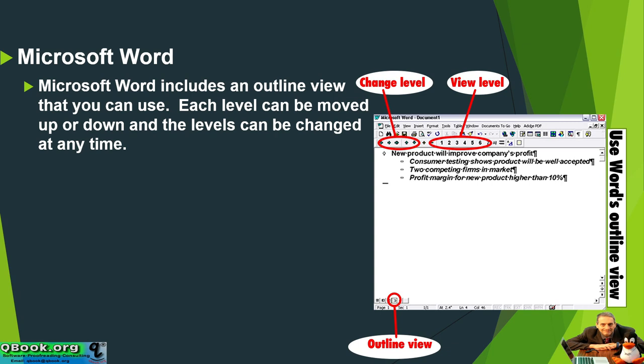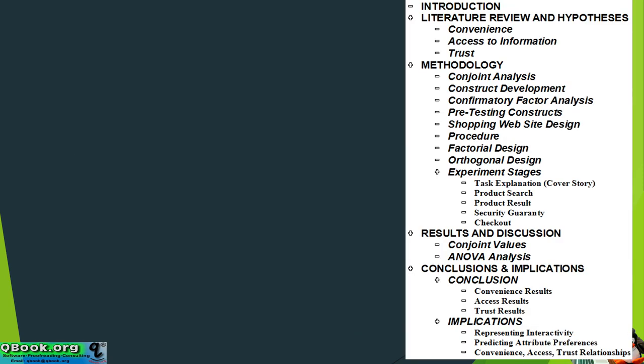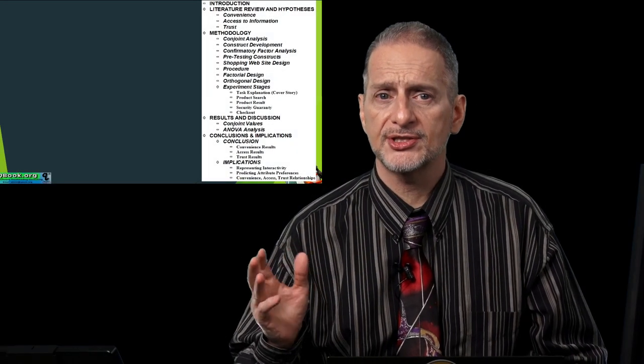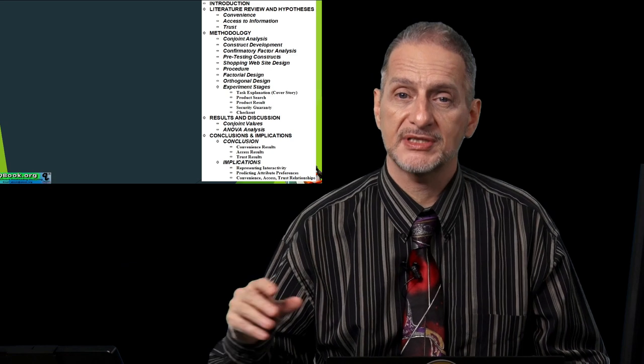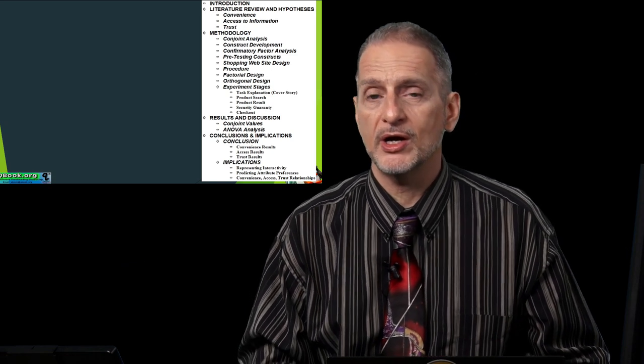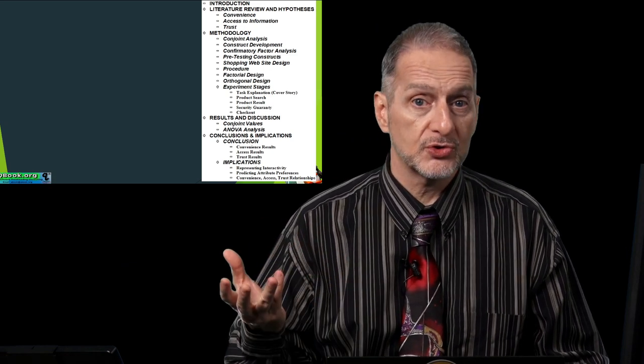Microsoft Word includes an outline view that you can use. Each level can be moved up or down, and the levels can be changed at any time. And this is what an outline looks like. Now, I just mentioned Microsoft Word has a good function, but so does LibreOffice, the open source office that also does outlining very well. So choose which one you like.